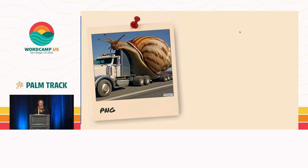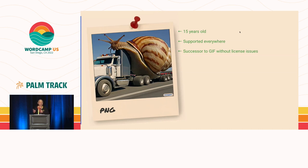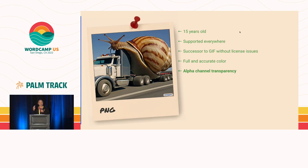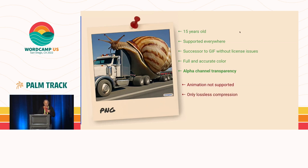Then along came PNG, 15 years old and supported everywhere. It's a successor to GIF — it came about to resolve the licensing issues with GIF compression. It had full and accurate color, and also alpha channel transparency, meaning each pixel could have a certain level of opacity. That gave images smooth edges when showing the background through, whereas GIFs had very blocky, tough edges. PNGs are still widely used for things like product images where you want good color quality, high resolution, no loss of quality, and transparency. PNG didn't support animation, and it only had lossless compression, so unlike JPEG you couldn't dial down compression to make a really small image.